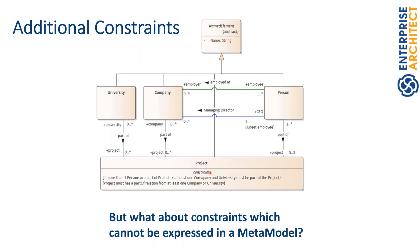I could create a model where a Person is part of a Project but not part of a Company or University. Therefore I have added an additional constraint: a Project must have a PartOf relation from at least one Company or University. It can have both in any number, but at least one of them must be set. An XOR constraint doesn't fit here because it's not either-or — it can be both. And a more complex constraint: if more than one Person is part of the Project, then at least one Company and at least one University must also be part of the Project.